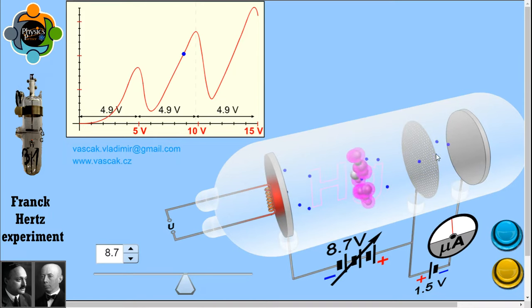Electrons which do not have sufficient energy on reaching the grid will be slowed down and will fall back to the grid. The experiment results confirm the existence of discrete energy levels. As long as electron collisions are elastic, the electrons will not lose energy on colliding with the gas molecules in the tube.